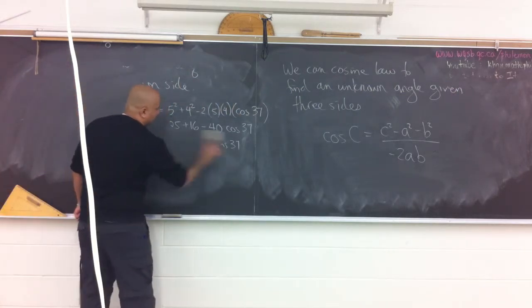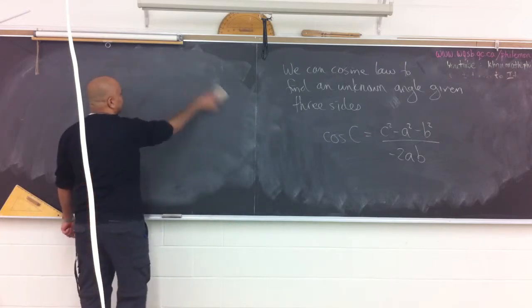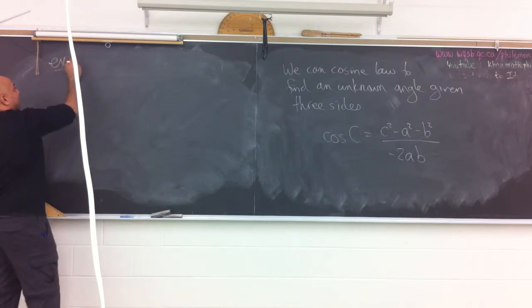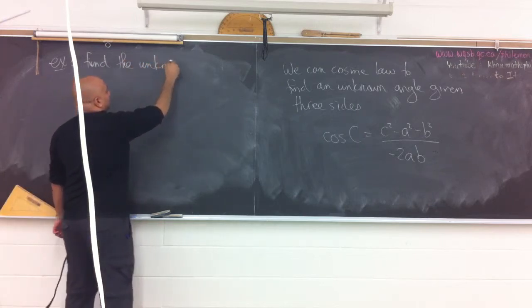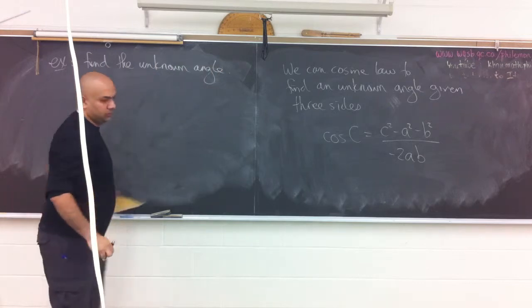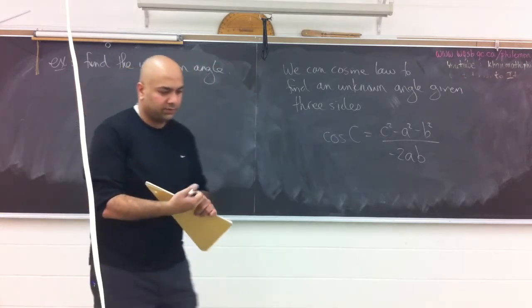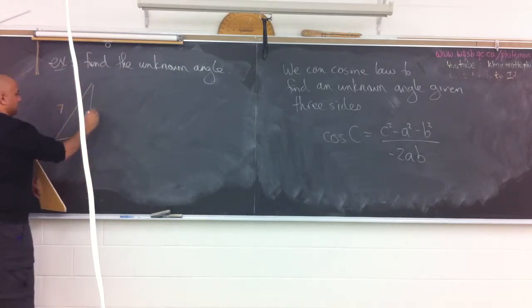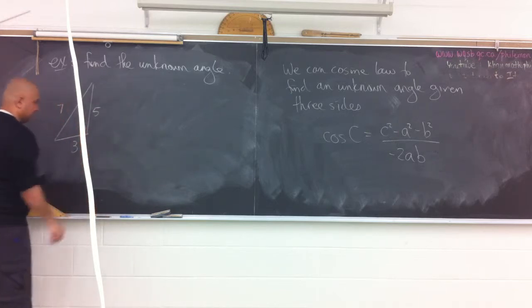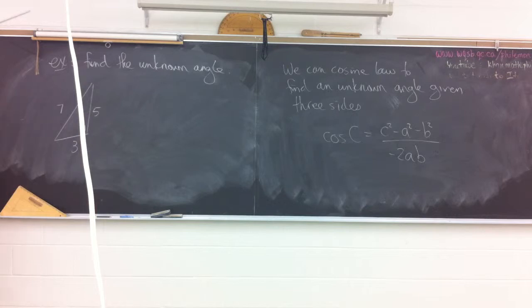After this example, that'll be it. I'll hand up the homework and then I'll do the enrichment for those who care. Find the unknown angle. So I've got my triangle. My three sides, seven, five, three. My theta is in that corner. And the formula that's written is still written on the other board over there. Don't get bogged down again with the letters. Think of what the letters actually represent.